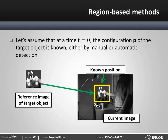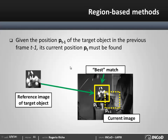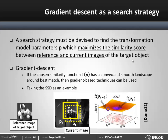In practice, we assume that the position of the object at the origin is known, either by manual or automatic detection. We also assume that we know the position of the tracked object in the previous frame. This helps reduce the computational burden involved in the search for new transformation parameters. And if we choose a similarity function that is smooth and differentiable, we can use gradient-based techniques to find the optimal transformation parameters p.